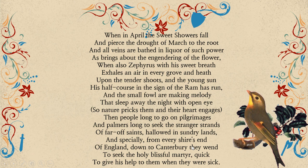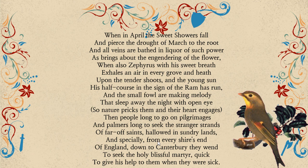"Hallowed in sundry lands" — sundry means various. "And especially from every shire's end of England down to Canterbury they went to seek the holy lustful martyrs, quick to give help to them when they were sick." The saint in Canterbury is called Thomas Beckett. Thomas Beckett was a friend of King Henry II of England — they were childhood friends. But when Henry becomes king, he wants to give some position to his friend, who is now a clergyman, and there are some squabbles between the two. For a while — five years — Thomas Beckett leaves England and lives in France.